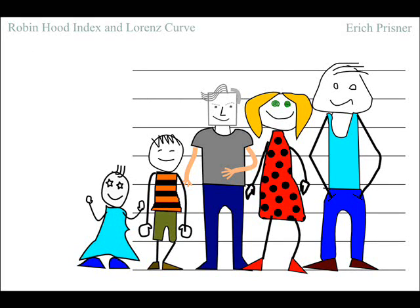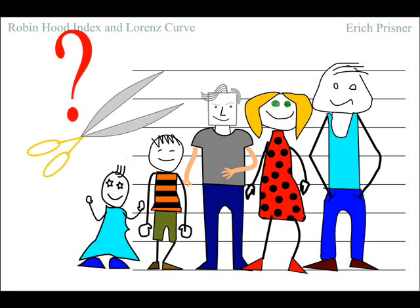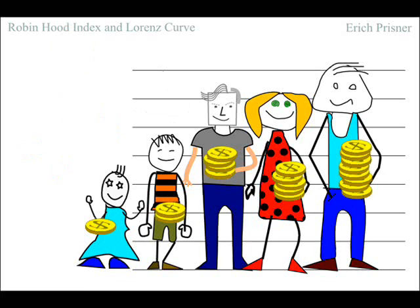In the previous video we talked about distribution of height among the members of Lorenz family. Here is the extended family: Anne, Bob, me, Cindy and Doug. For the Robin Hood index we want to redistribute whatever we measure and height is kind of difficult to redistribute. So let's rather talk about wealth.